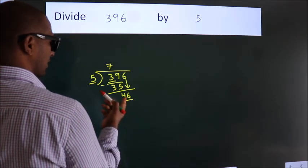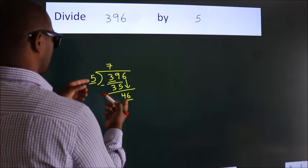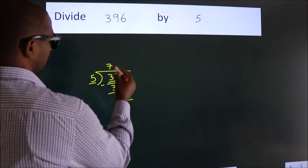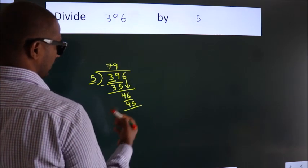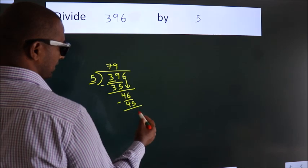So 46. A number close to 46 in 5 table is 5 9s 45. Now we subtract. We get 1.